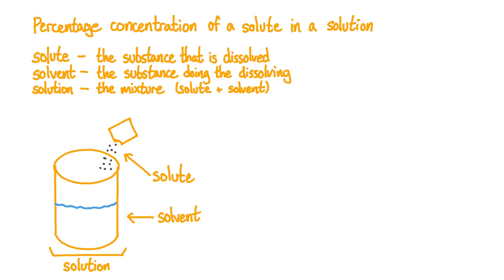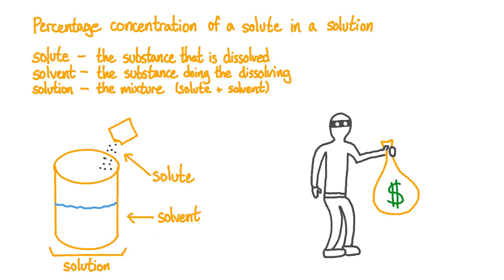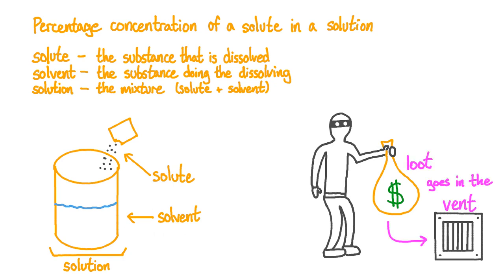When we talk about the percentage concentration of a solute in a solution, it's important to know what the solute is and what the solution is. But solute and solvent can be easy words to mix up, so here's a handy mnemonic device. Let's imagine a burglar carrying a bag of stolen goods. As the police arrive, he may need to hide his bag in an air duct nearby. So the robber's loot goes in the vent. Similarly, in a solution, the solute goes in the solvent.